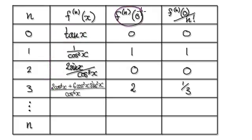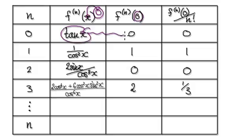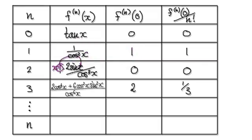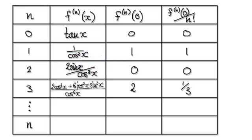Now evaluate it at x equals 0. You would put 0 into here. When you put 0 in, tan of 0 would give you 0. At x equals 0, you would put this in — the whole thing here would be 1. Then at x equals 0, put 0 into here — this whole thing here would be 0, and so on. At x equals 0, this whole thing here equals this thing here.